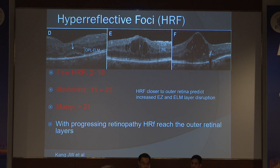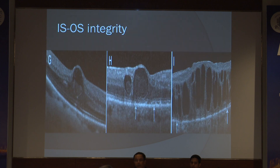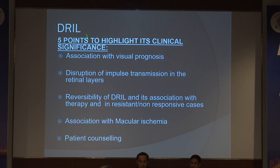Regarding hyperreflective foci: 2-10 is few, 11-20 is moderate, and more than 21 is many. With progressing retinopathy, hyperreflective foci reach the outer retinal layers. The IS/OS integrity is an important biomarker. Disruption of IS/OS integrity is a poor prognostic biomarker. The key association is with visual prognosis through disruption of impulse transmission and disorganization of the retinal inner layers (DRIL).